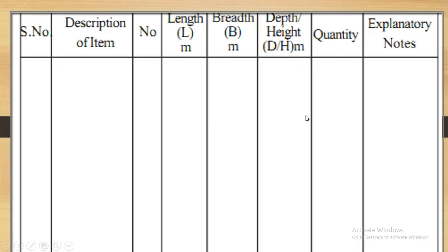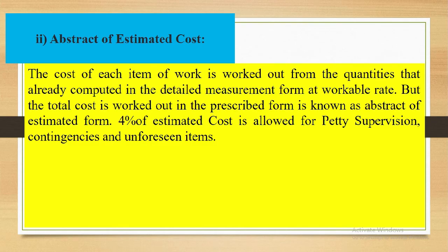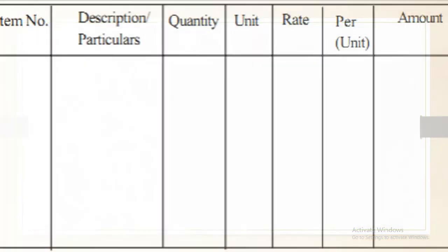Then here we define the explanatory notes above abstract of estimated cost. This is the second method of estimation. The cost of each item of work is worked out from the quantities that are already computed in detailed measurement form at workable rate. But the total cost is worked out in prescribed form is known as abstract of estimated form. Four percent of estimated cost is allowed for petty supervision, contingencies and unforeseen items. Here you can see proforma of the abstract quantity estimation.